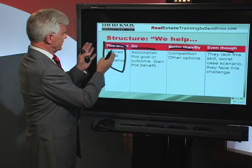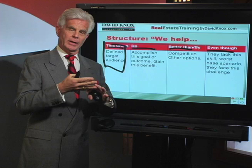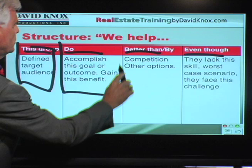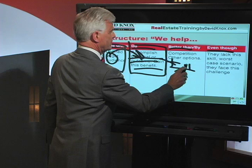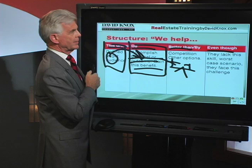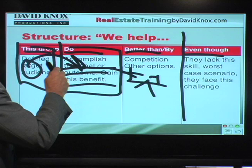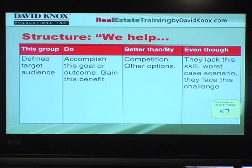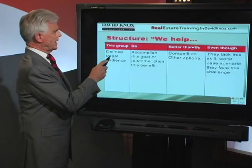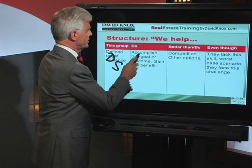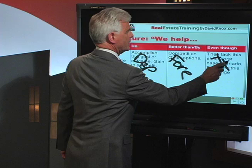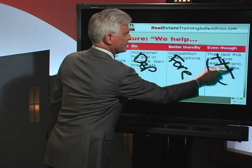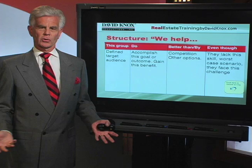You define your target audience — 'I help this group.' For me, I help residential real estate agents, I help consumers, and I help managers and trainers — three different groups, three different products. Then: 'I help them do this' — what goal, outcome, or benefit do we help them accomplish? Then 'better than' the competition or other options. And finally, the USP acknowledges the challenge. For example: 'I help distressed sellers dispose of their property better than going through a foreclosure, even though they have no income and no equity.' We define the outcome and relate to the challenges they're facing.